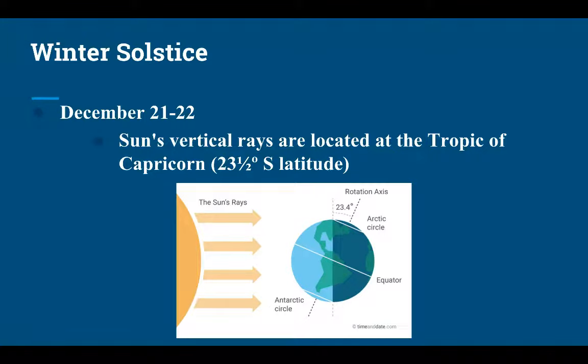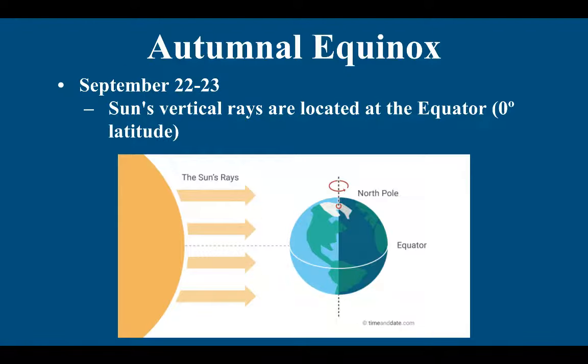Fast forward six months later, we're on the winter solstice occurring December 21st and 22nd. Now the sun's rays are hitting the Tropic of Capricorn 23 and a half degrees south. The northern hemisphere is facing away from the sun, so people in the northern hemisphere are not getting the sun's direct rays, which means less sun in the sky, less duration of the sun, and the insolation is not as direct, resulting in winter.